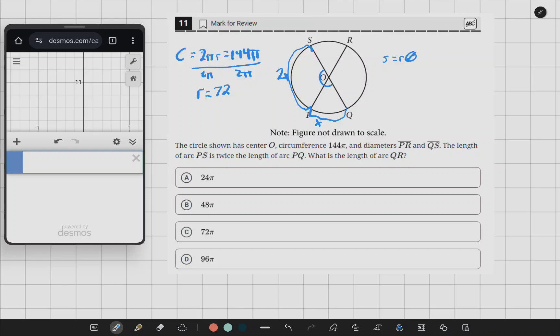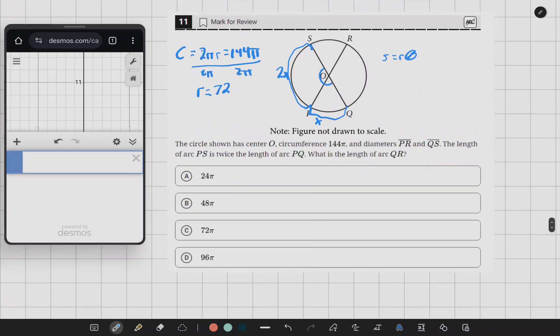In this case, θ is going to be π, since 2π is the full circle and we know that this is half of the circle. So we have s equals 72 times π.